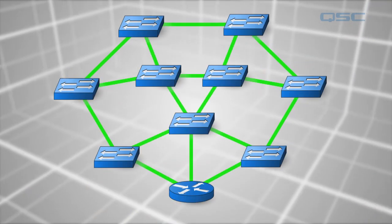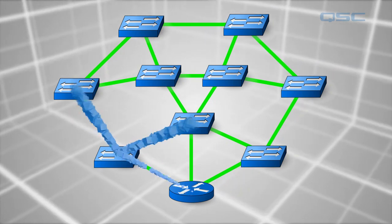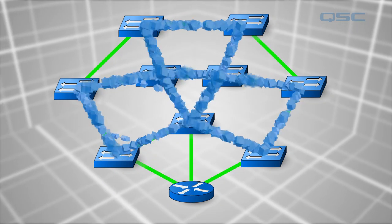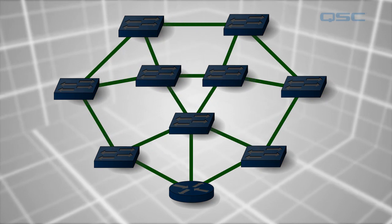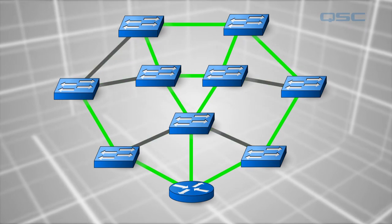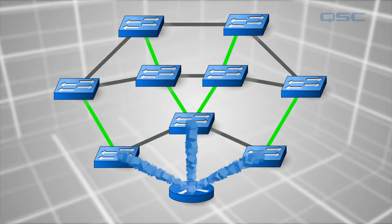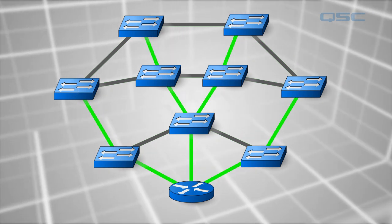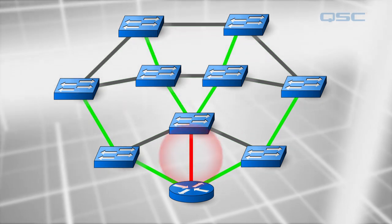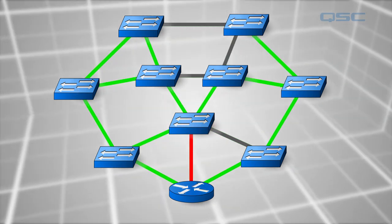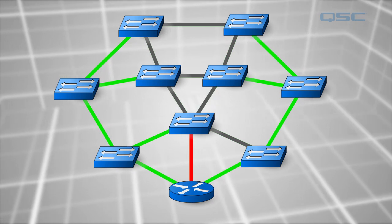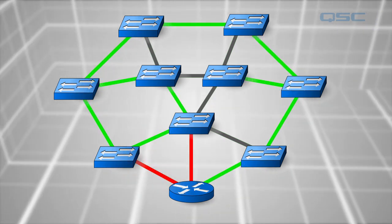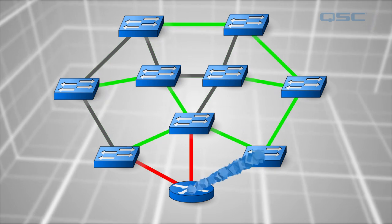A data loop can be disastrous to a network as it floods the bandwidth and can bring all traffic to a stop. Spanning Tree establishes a quickest path map for data to get through each switch on a network and disables the alternate paths. Then, if a connection fails, it dynamically changes which paths are open to create a new path, while still protecting from signal loops that could lead to infinite flooding or a broadcast storm.